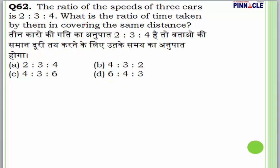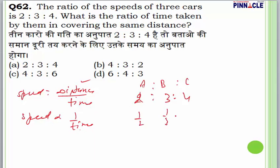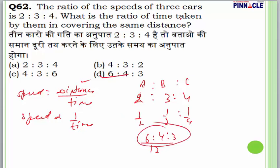Question 62: The ratio of speeds of three cars is 2:3:4. Since speed is inversely proportional to time for the same distance, the time ratio is 1/2 : 1/3 : 1/4. Taking LCM = 12, the ratio of times is 6:4:3. Answer is 6:4:3.